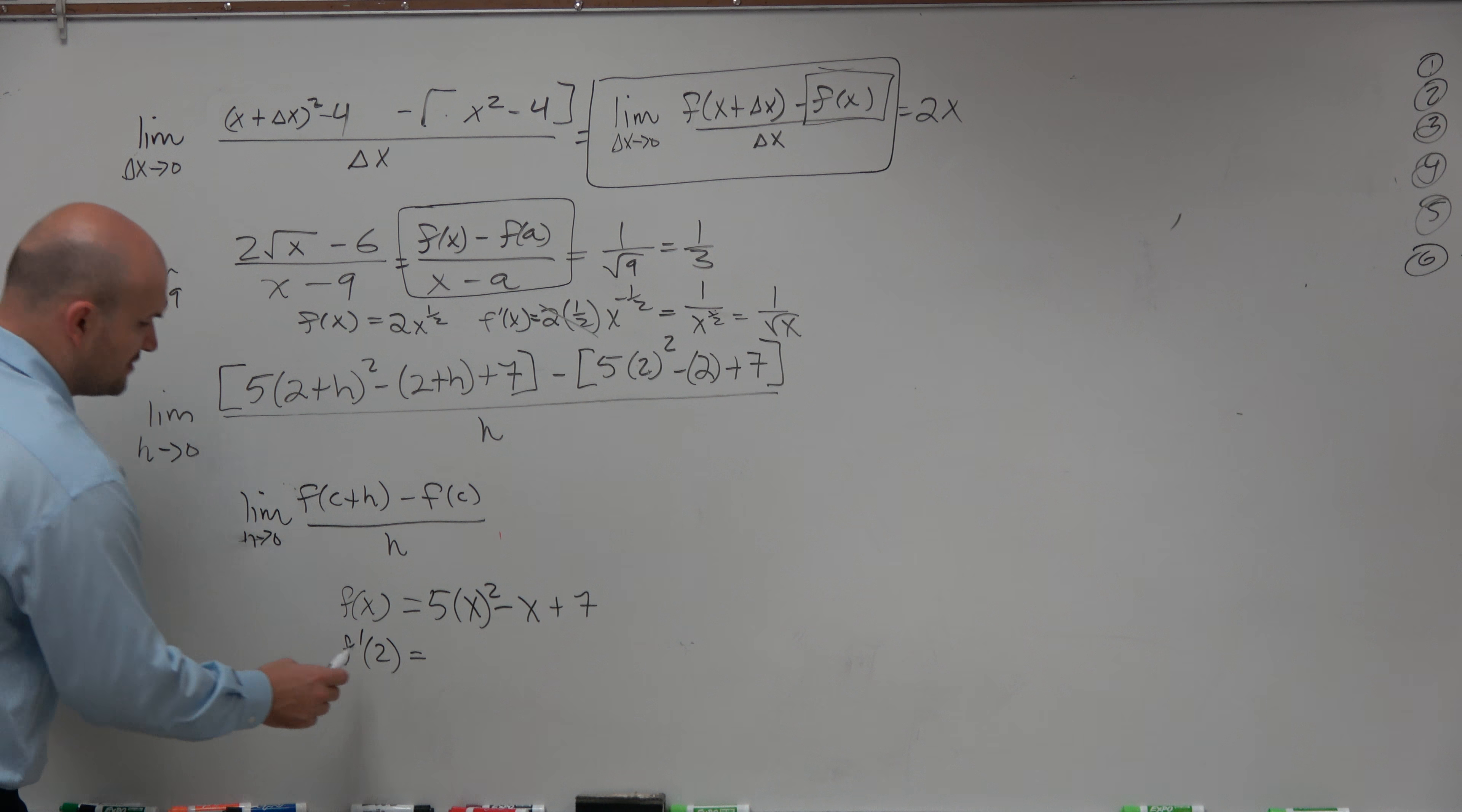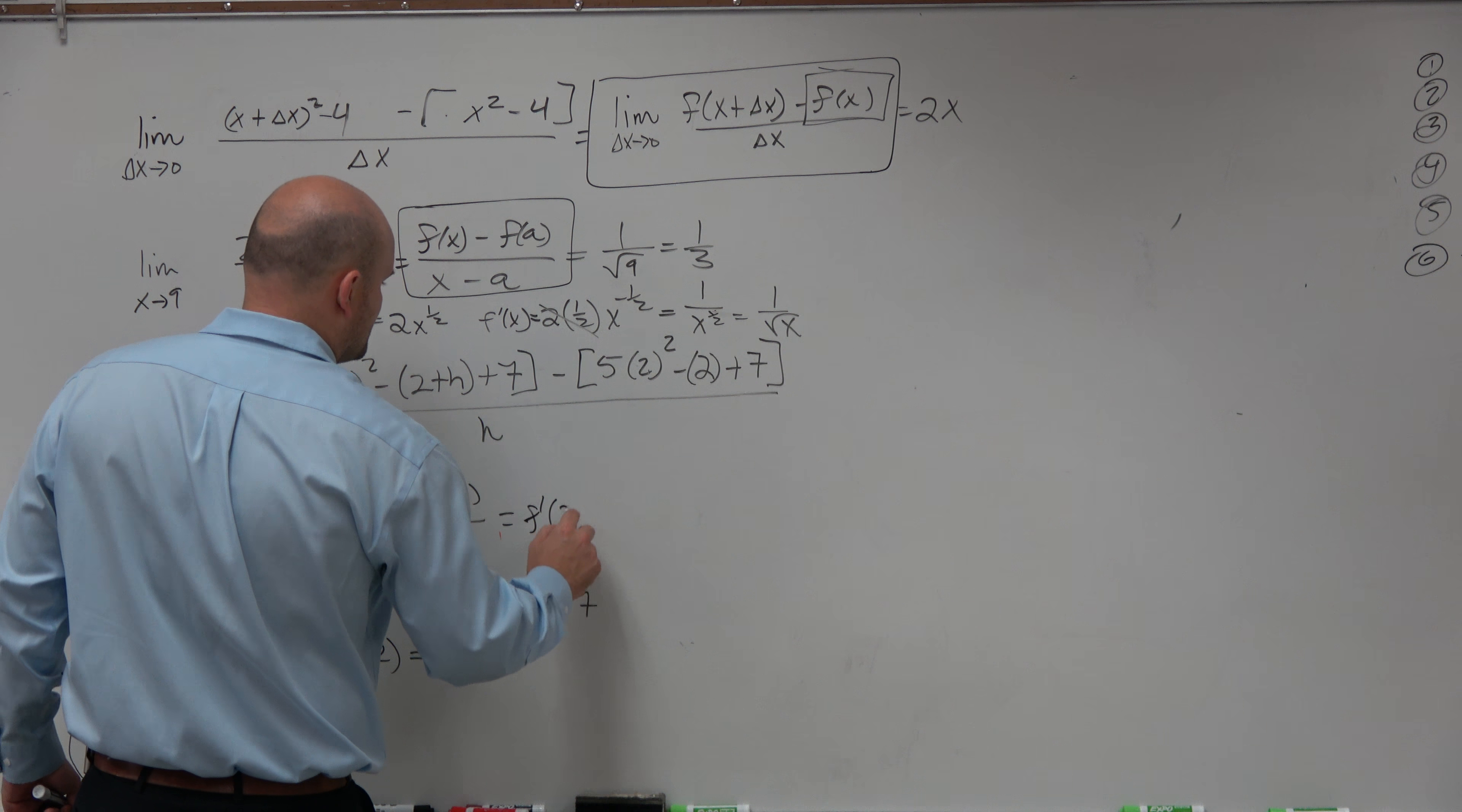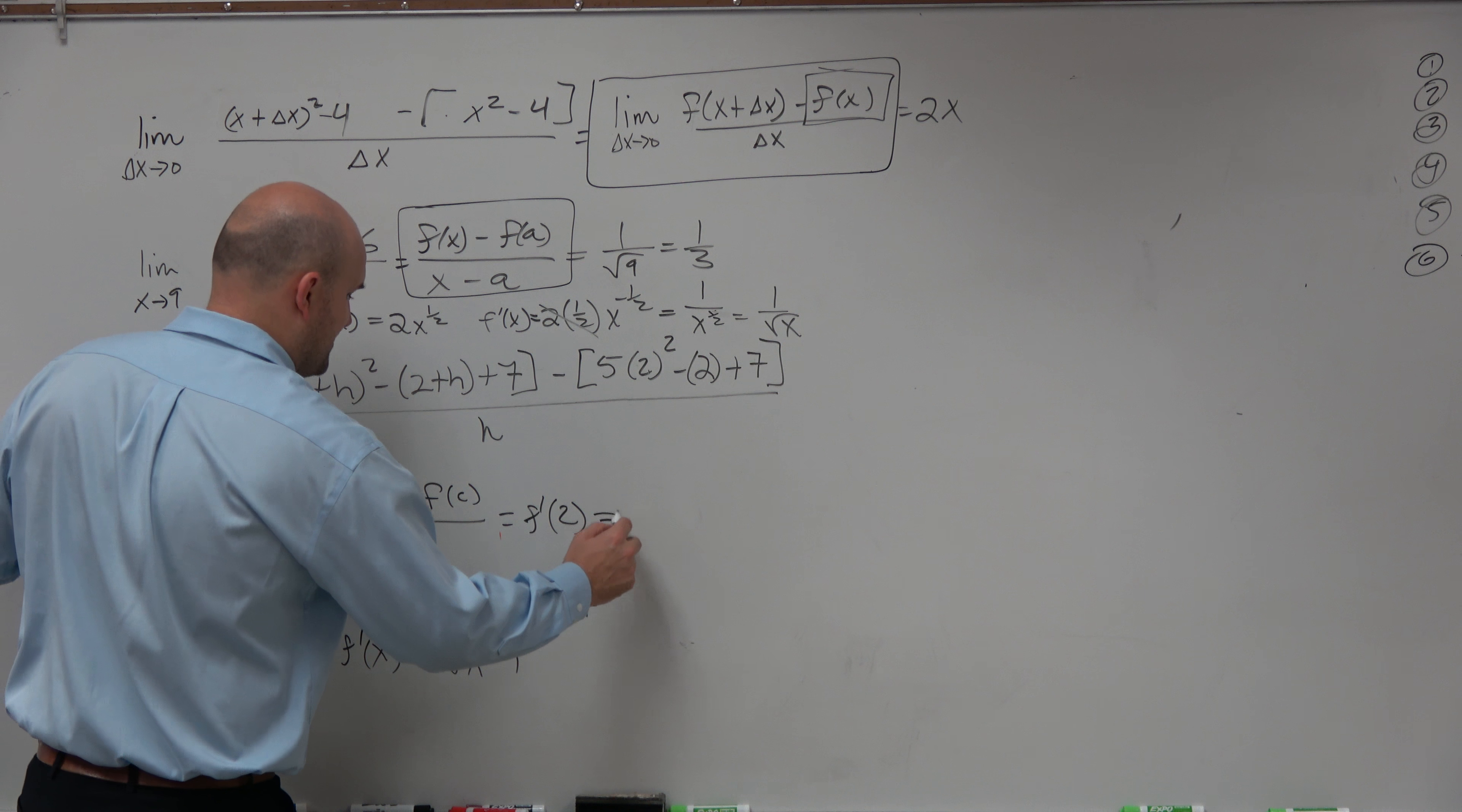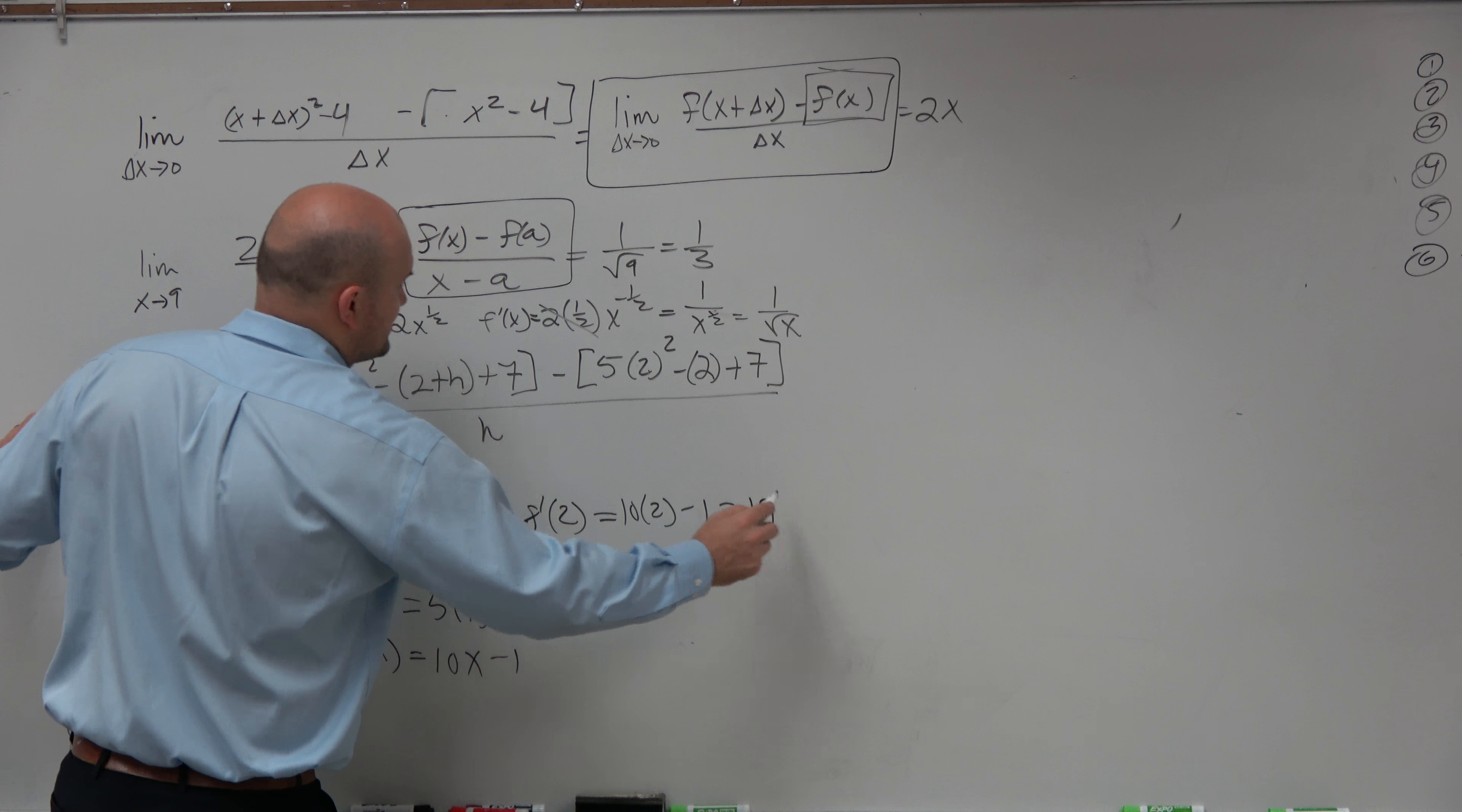So to do that, first thing we want to do is to find f prime. Well, actually, this is really trying to find f prime of 2. So to do that, let's find f prime of x, which is going to be 10x minus 1. So therefore, to find f prime of 2, we're going to do 10 times 2 minus 1 equals 19.